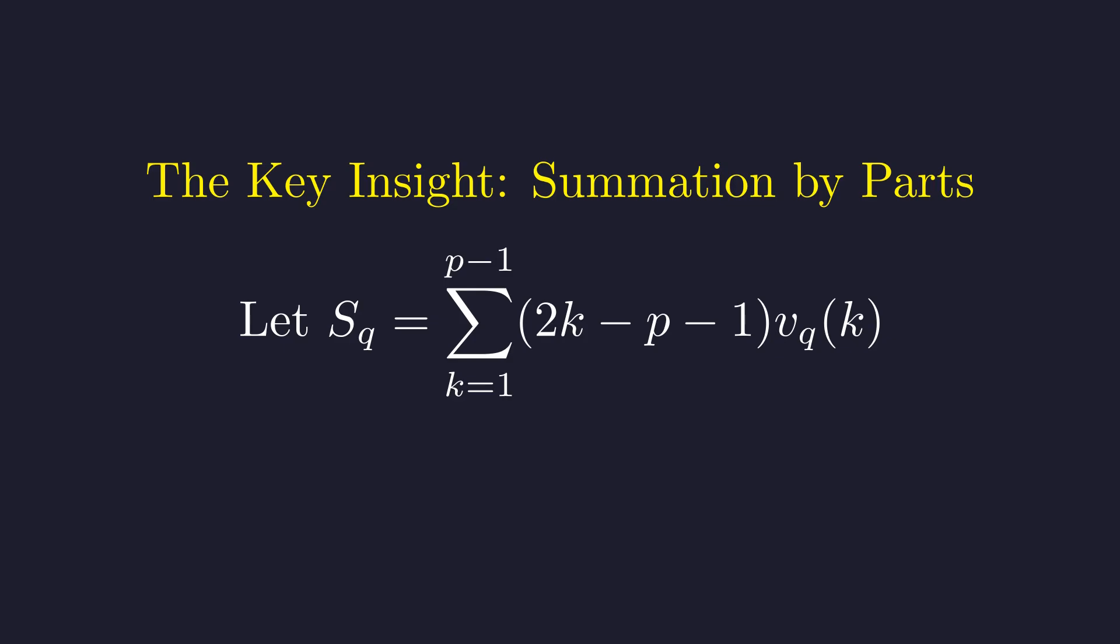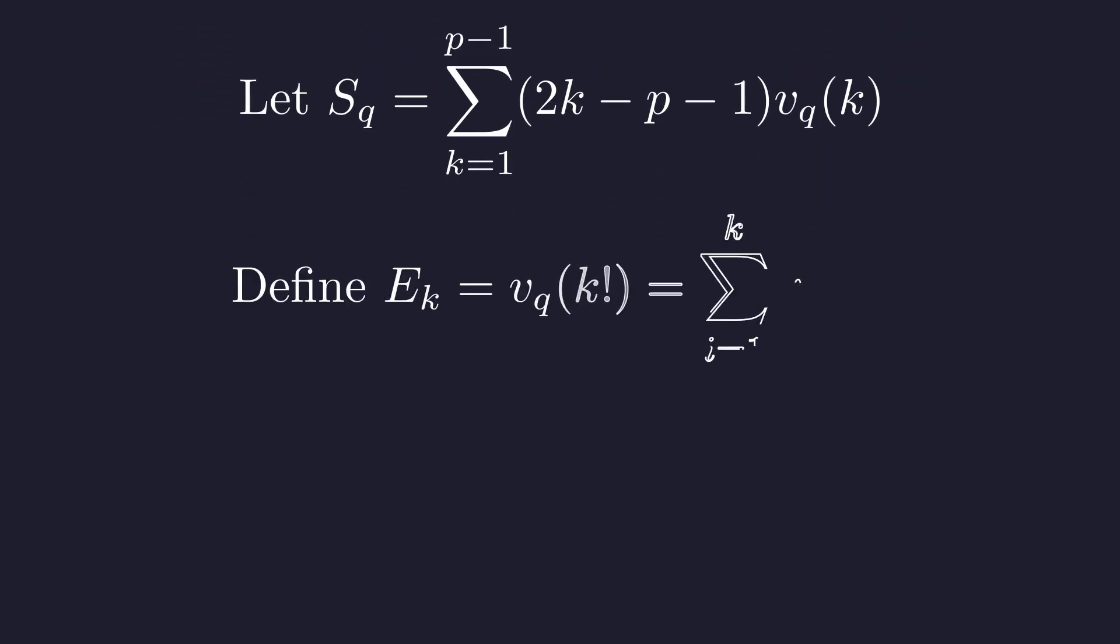Let me give this sum a name—let's call it S_q. The key insight is to rewrite each v_q of k in terms of something we can work with more easily: the valuations of factorials.